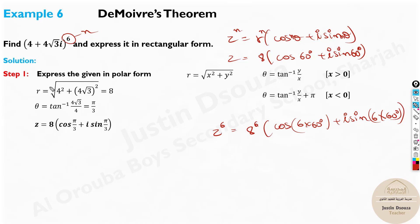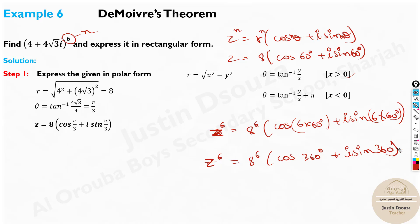We find R and theta, write it in polar form — Z equals 8 cos theta, that is R cos theta plus i sine theta. Then we apply De Moivre's theorem and simplify. Z to the power 6 is 8 to the power 6. And over here, cos 360 degrees plus i sine 360 degrees. Now what is sine 360? Sine 360 is 0. Let's check in the calculator as well — put sine and 360 degrees, make sure the mode is in degree mode. And cos 360 is 1. If cos is 1, sine will be 0.